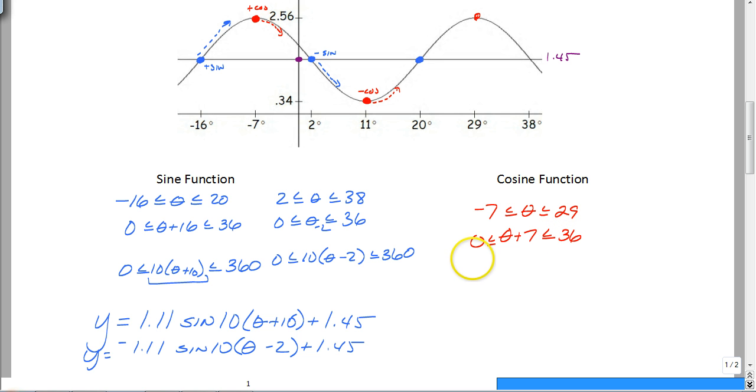And that's because, no matter how you do it, you're always going to get that B value to be the same, no matter if you're doing a positive sine, a negative sine, a positive cosine, or a negative cosine. Okay? So you still got that part.